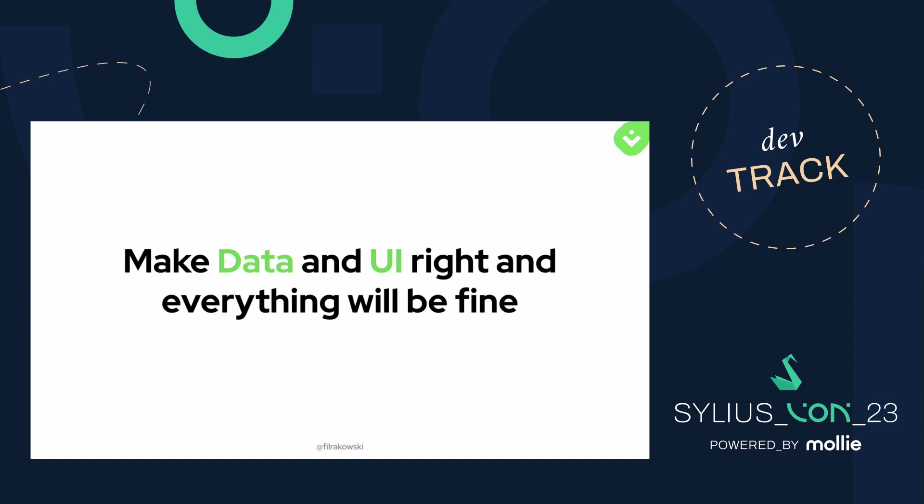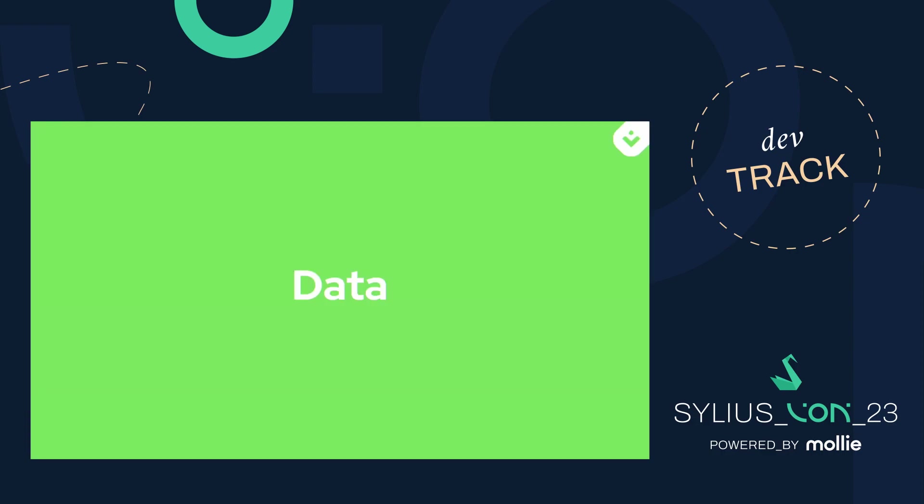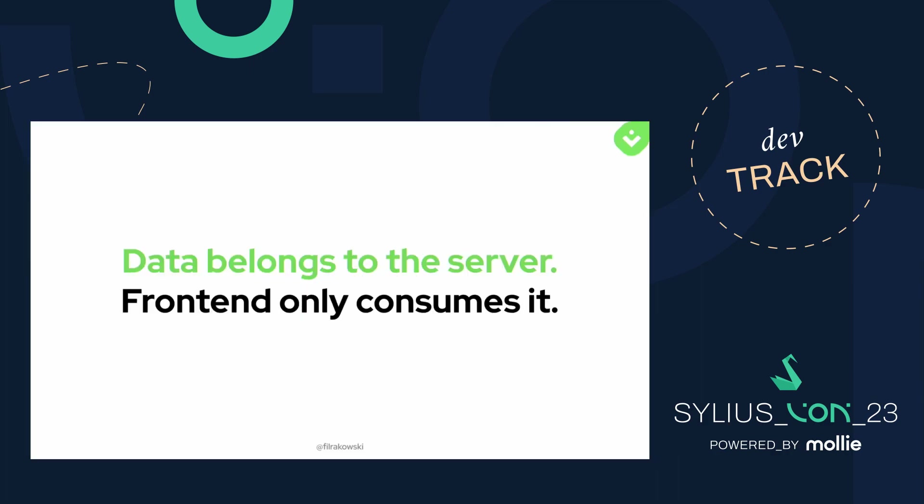From my experience, the thing that is most impactful for a successful implementation is making your data and UI right — very aggressively following separation of concerns. The thing to remember about data is that it belongs to the server. Everything related to data fetching, data transformation, data integration, orchestration — this should live outside the frontend layer. The frontend's responsibility is only to display the data. Nothing else.